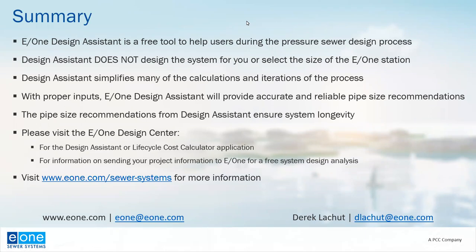E1 creates zones whenever a change in flow is likely to occur. Changes in flow occur for essentially two reasons: one is a branch connection, where branch A and branch B connect to a common point creating branch C whose flow is the sum of the two. With the simultaneous operation model, the other time flow changes is when we reach the next level of simultaneous operations. For example, with up to three pumps there'll be two pumps operating simultaneously; with nine total pumps there'll be three. So zone changes aren't necessarily only where branches occur — it can also be where the flow changes because more simultaneous operations are occurring.